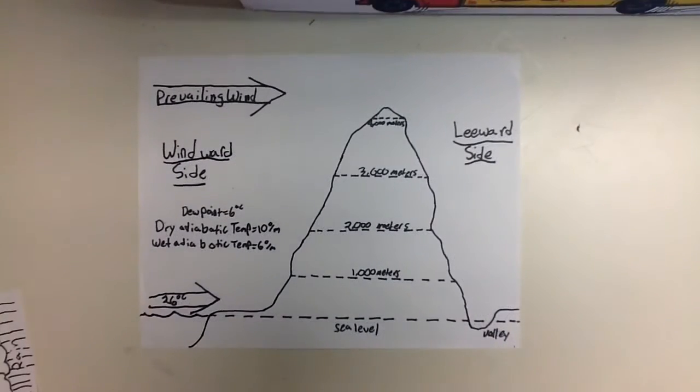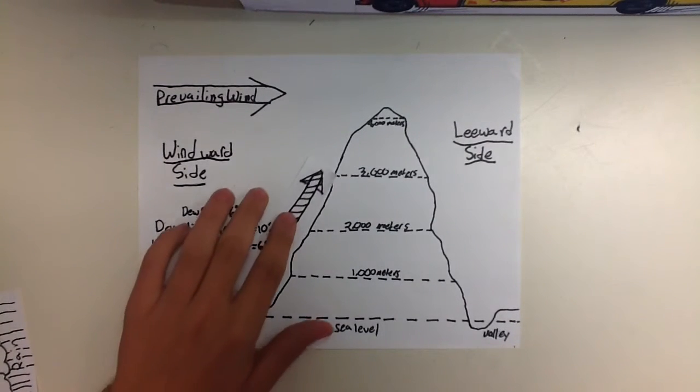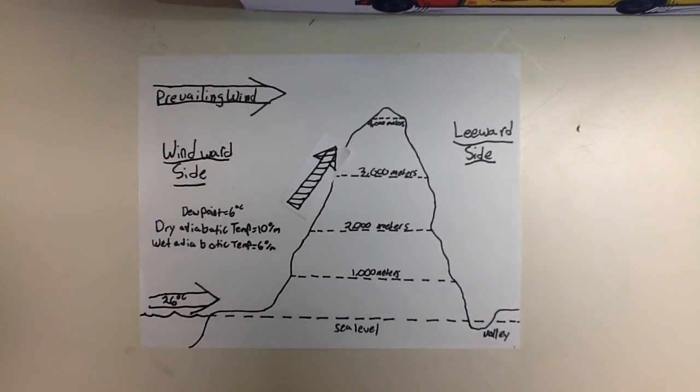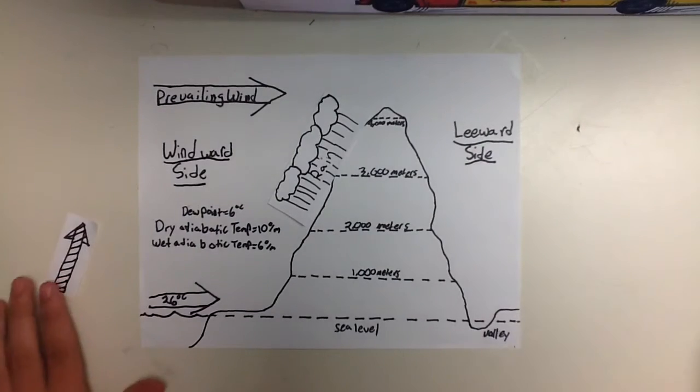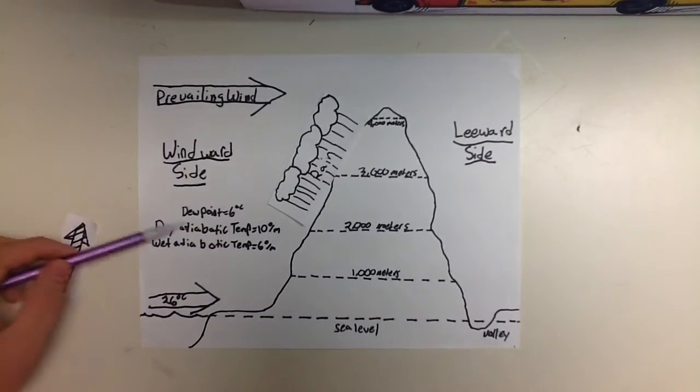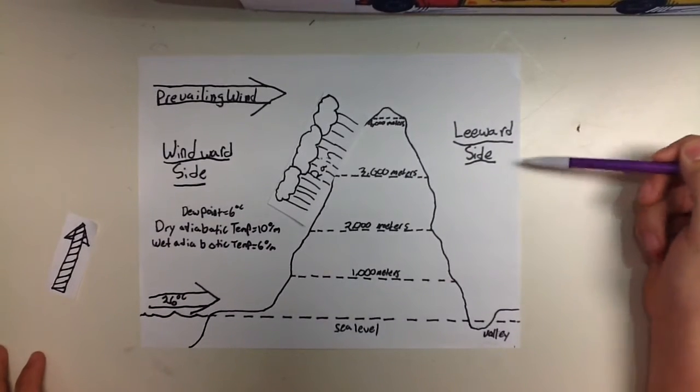Before we begin, we should start off with the basics. As air rises over a mountain, it cools until it reaches the top. If it cools down to the equivalent of dew point temperature while rising, precipitation can occur. The windward side of a mountain is over here and generally receives more precipitation, and the leeward side is drier.